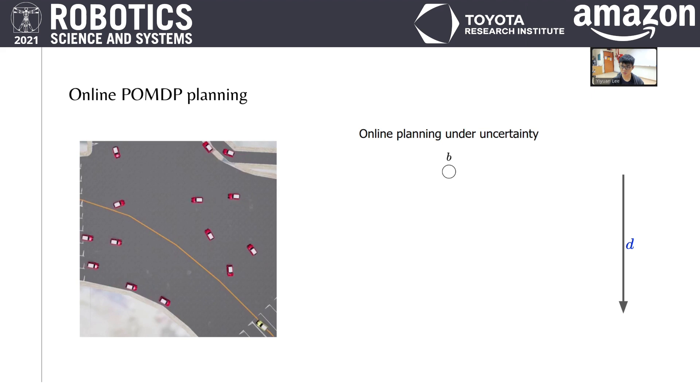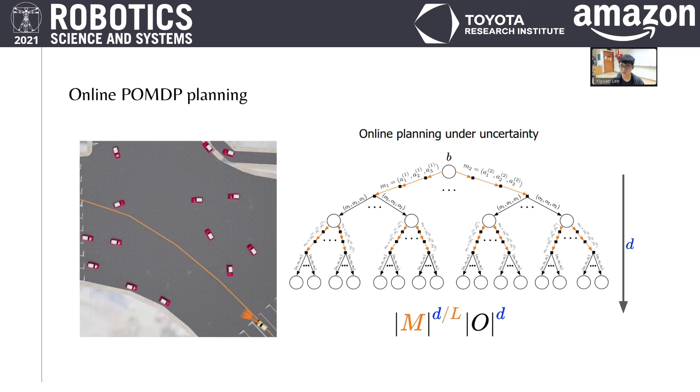This problem can be tackled using macro actions, where we use a fixed set of open-loop action sequences at each action branch. The planner then branches over all possible observation sequences and repeats for the remaining search depth. Using macro actions, the planner can cover the same depth with an exponentially reduced complexity. This allows it to search over a much longer horizon within the same time limit.